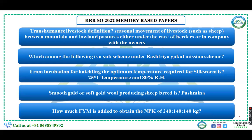Transhumance livestock definition: the seasonal movement of livestock such as sheep between mountain and lowland pastures, either under the care of herders or accompanied by owners. One question asked which is a service scheme under Rashtriya Gokul Mission — exact options were unavailable. For silkworm incubation, the optimum temperature required is 25 degrees Celsius and 80 percent relative humidity. Pashmina is a smooth, soft, gold wool-producing breed — the answer was Pashmina.